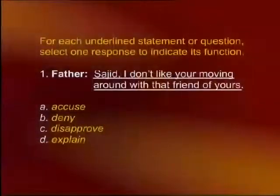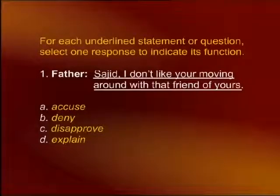This is father speaking to his son. He says 'Sajid, I don't like your moving around with that friend of yours.' What function is being indicated? Is he accusing his son, denying something, disapproving, or explaining? The father is showing disapproval. Those words are used to convey disapproval on the part of the father to his son Sajid.